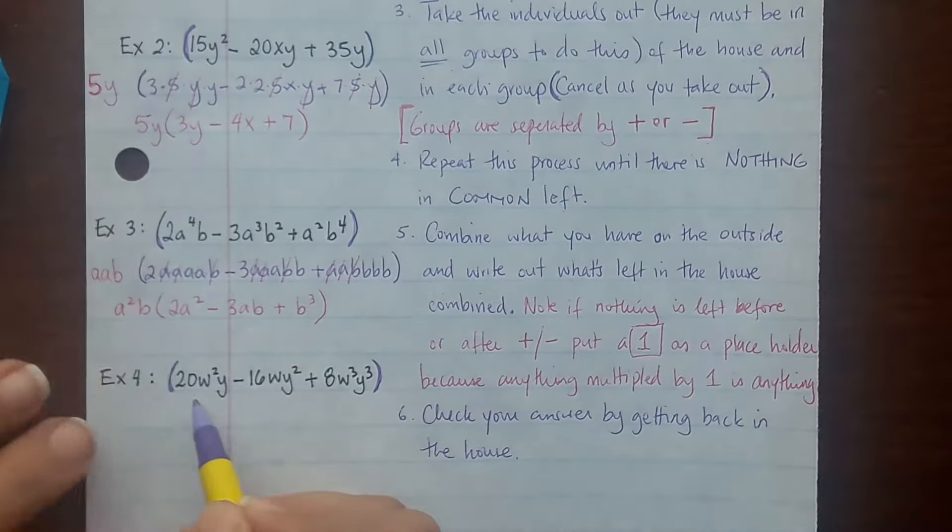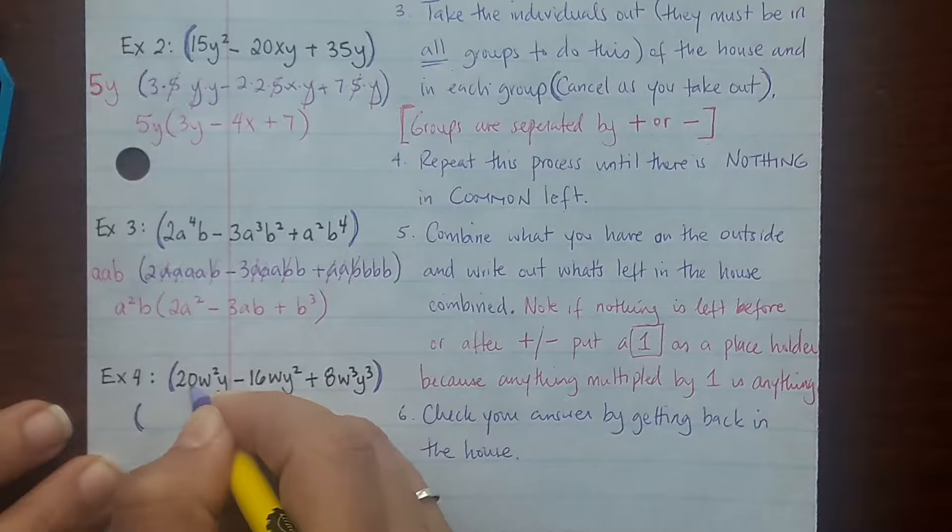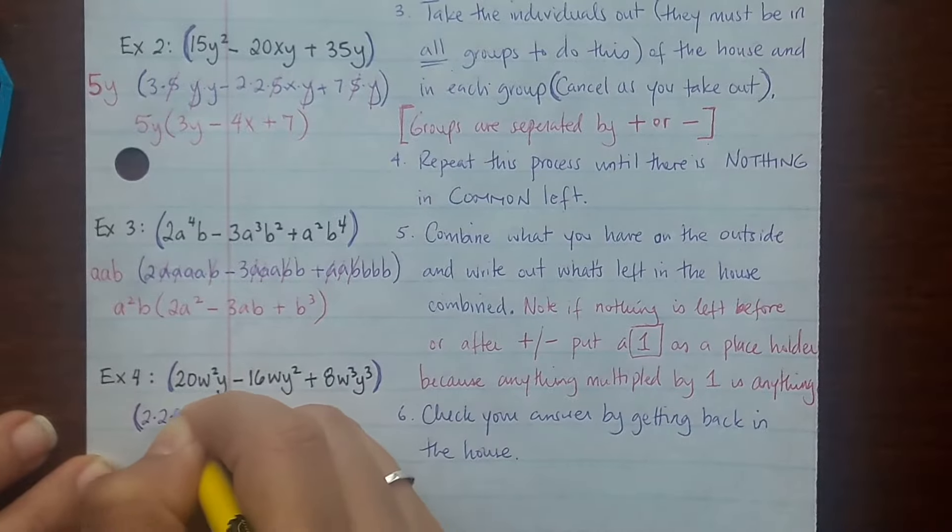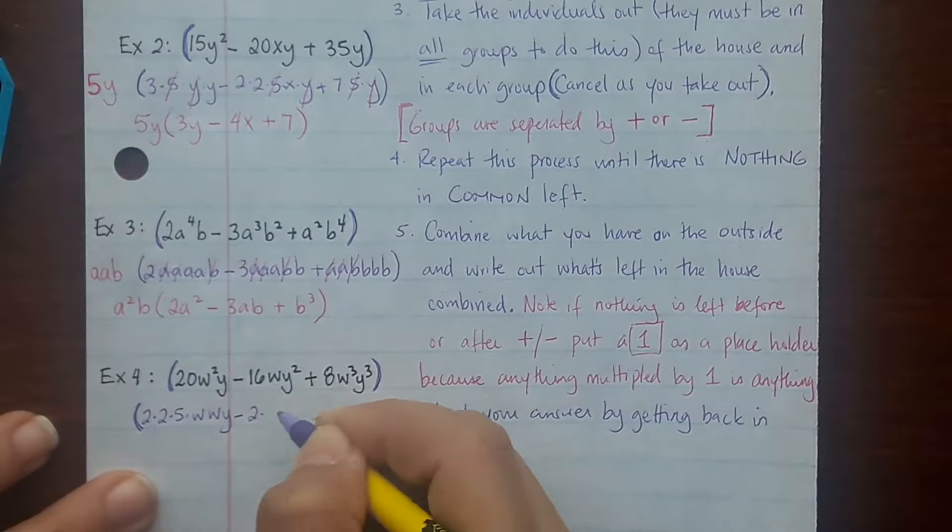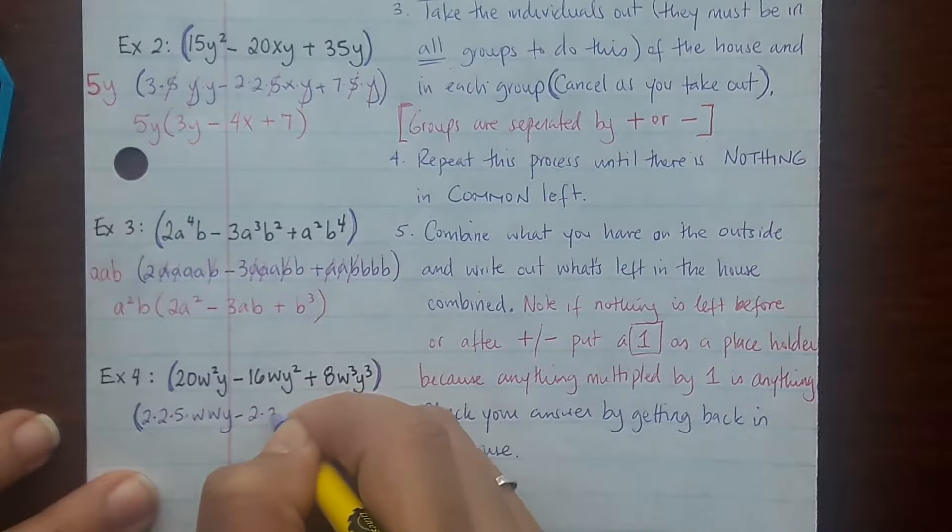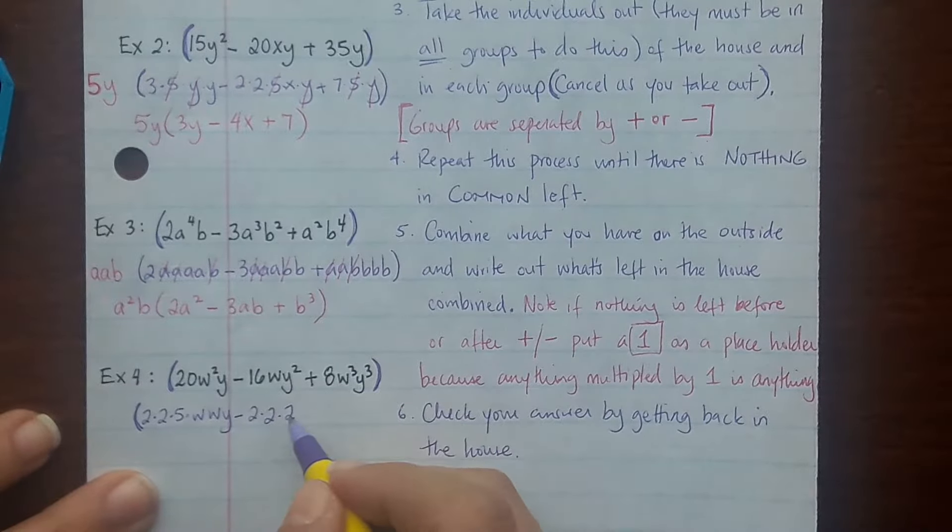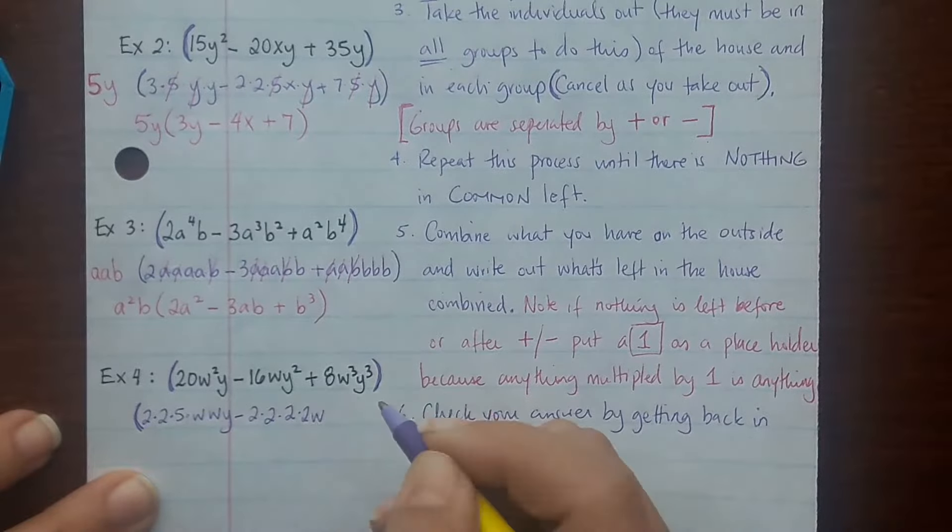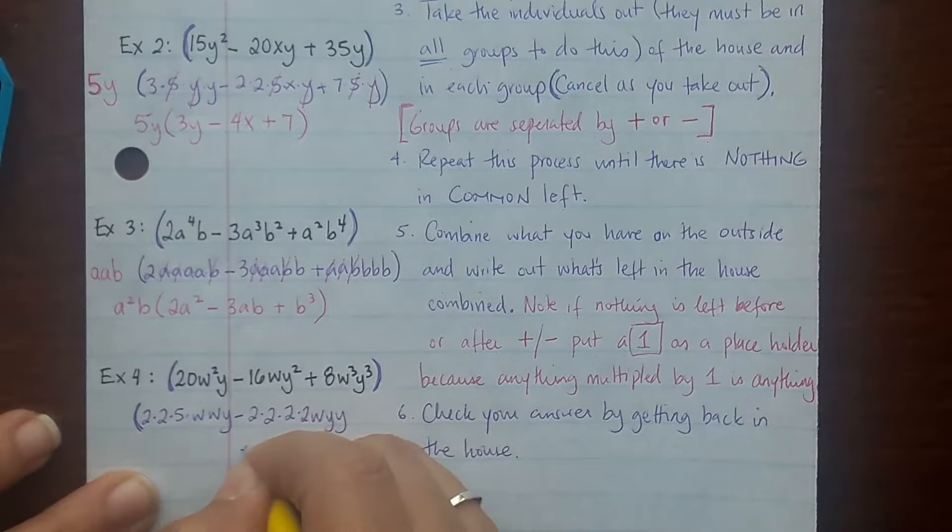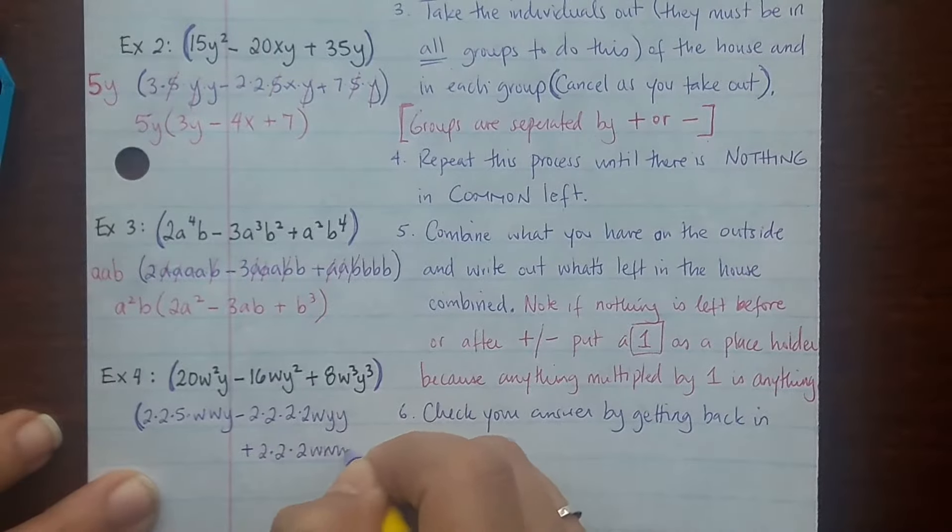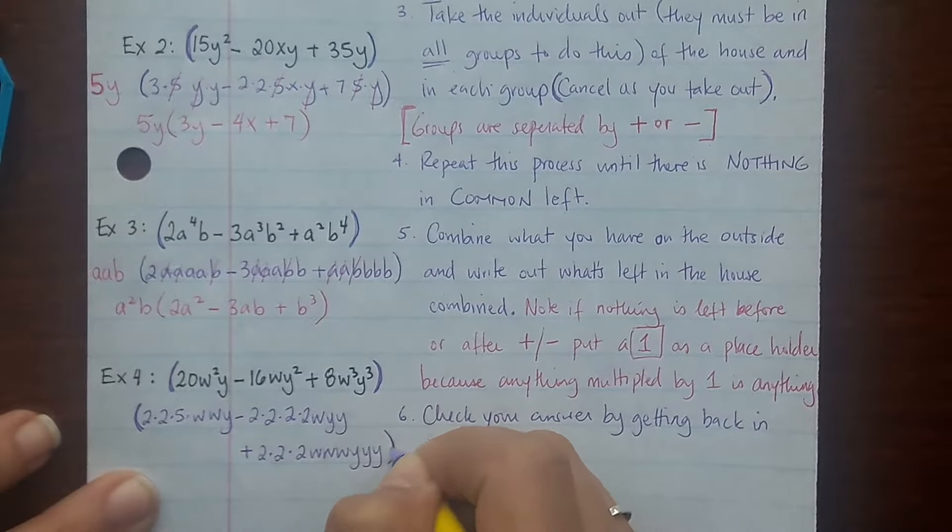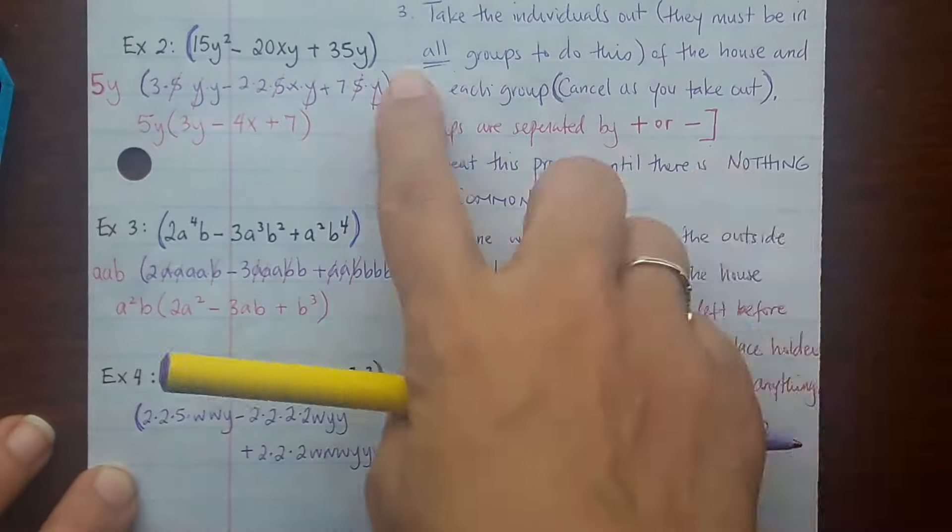Alright, break the individuals down. So how does 20 break down? 2 times 10, which breaks down to 2 times 5, so 2 times 2 times 5. 2 w's, 1 y. 16: 8 times 2, so 2 times—and then 8 breaks down into 4 times 2, so another 2. So 4 2's. 3 w's, 3 y's. And then 8 breaks down into 4 times 2, which 4 breaks down into 2 times 2, so 3 2's. 3 w's, 3 y's. And you just multiply it back out to make sure that it is the number.